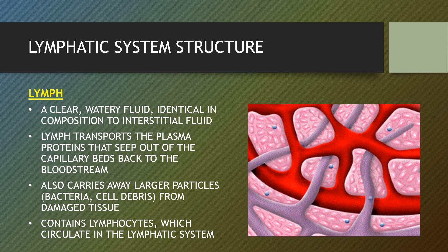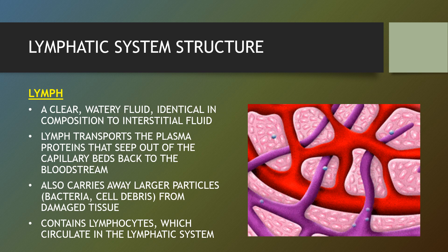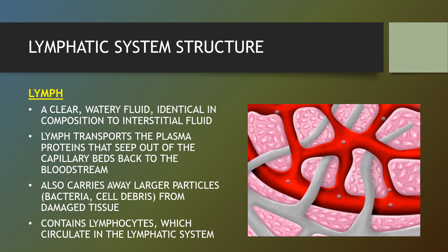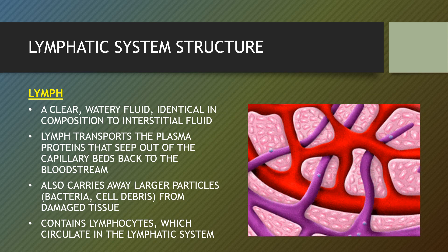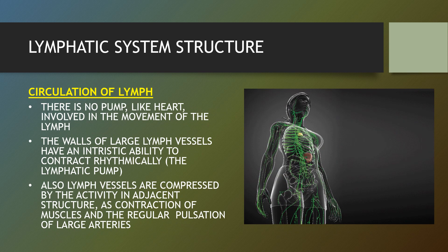Lymph is a clear watery fluid identical in composition to interstitial fluid. Lymph transports the plasma proteins that seep out of the capillary beds back to the bloodstream. Lymph also carries away larger particles like bacteria and cell debris from damaged tissue, and contains lymphocytes which circulate in the lymphatic system. Fluid forced out of the bloodstream during normal circulation is filtered through lymph nodes to remove bacteria, abnormal cells and other matter, then transported back to the bloodstream via the lymph vessels.